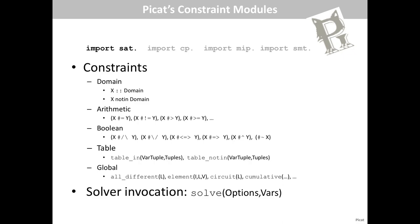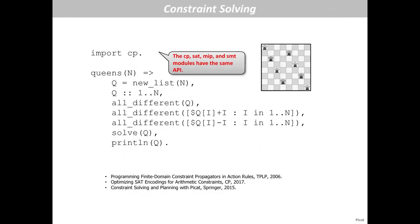PyCAD supports constraint modules, and all solver modules — SAT, CP, MIP, and SMT — share the same API. This API allows you to define domain variables, arithmetic constraints, Boolean constraints, table constraints, and global constraints, and then just call solve to invoke the solver. With this API, you can switch from one solver to another simply. Here is an N-queens example: you create a list of variables, declare the domain, write a few constraints, then call solve to instantiate the variables.